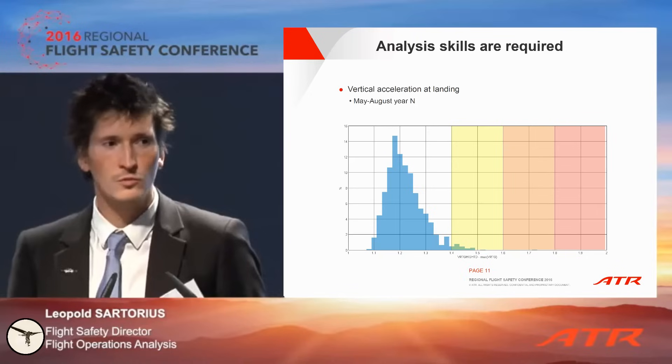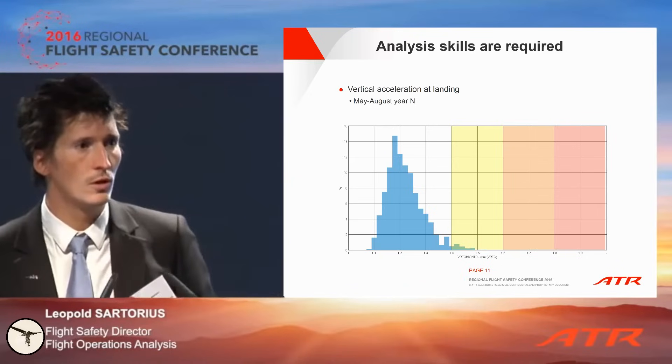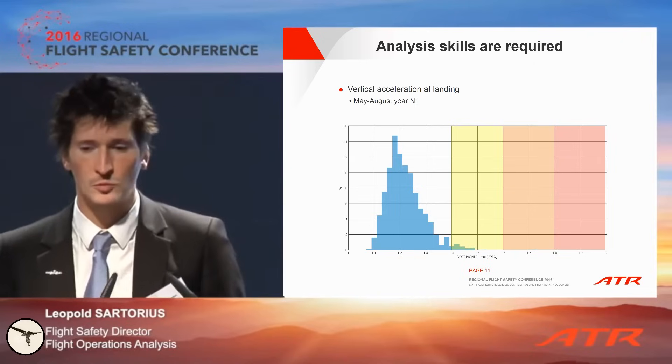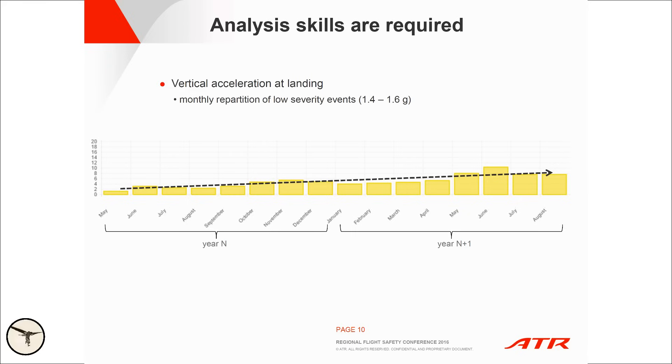The third point is in terms of analysis skills within the airlines. I will go through an example that shows how difficult it is sometimes to interpret data. Here we have the data from May to December of one year, and afterwards from January to August, the year after. So each column is one month. The Y-axis is the percentage of flights for which the touchdown occurred at a vertical G between 1.4 and 1.6 G. It's no hard landing, be reassured. That's nice. But you can see, well, quite increasing. Is it good? Is it bad? Generally the first reaction is increasing, not good.